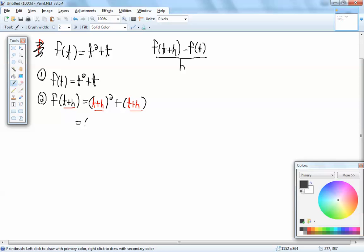Well, T plus H squared is T plus H times T plus H plus, and that's just T plus H. Foil this. T times T is T squared. T times H is HT. H times T is HT, and H times H is H squared, plus T plus H.